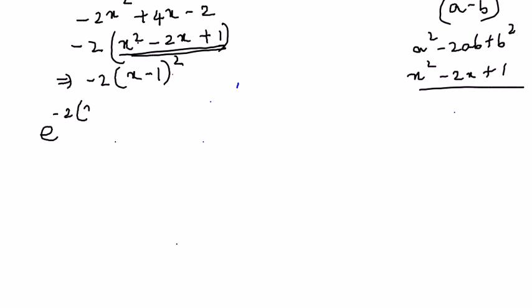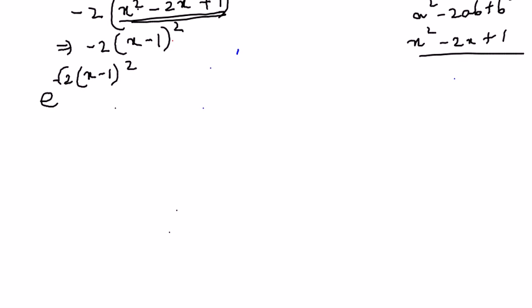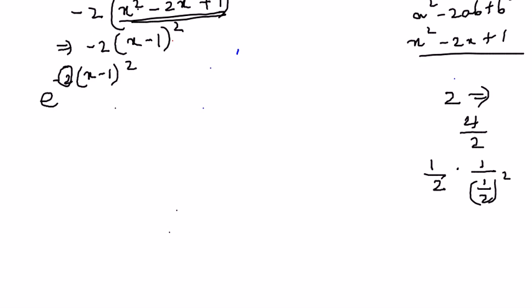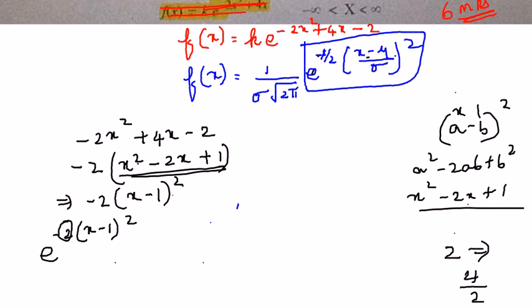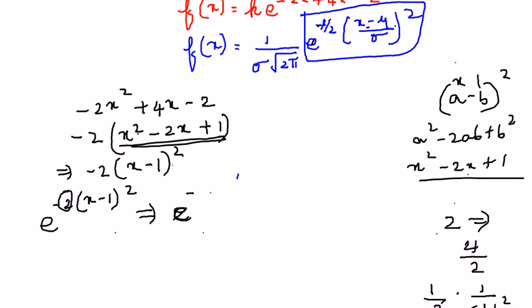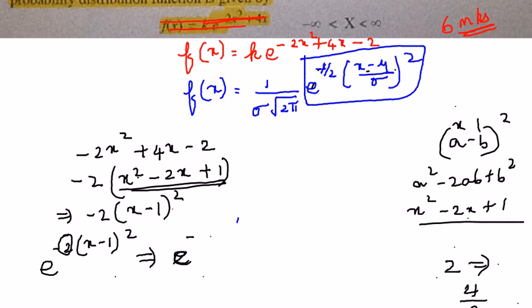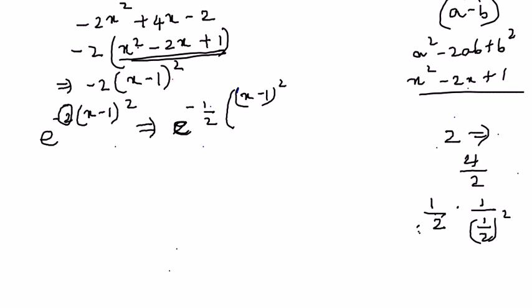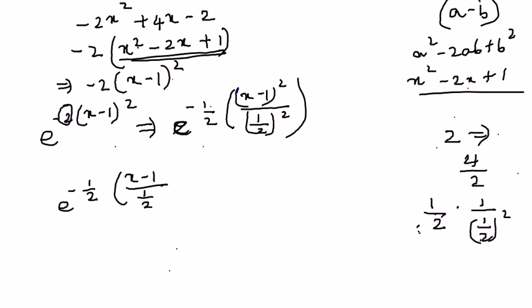If we put the power it becomes e^(−2·(x−1)²). Now let's see how we can write the 2. 2 can be written as 4/2, and 4/2 can be written as (1/2)·(1/(1/2))². We want to bring it to the form e^(−½·((x−μ)/σ)²), so the −2 here becomes −½·((x−1)/(1/2))², or equivalently e^(−½·((x−1)/(½))²).